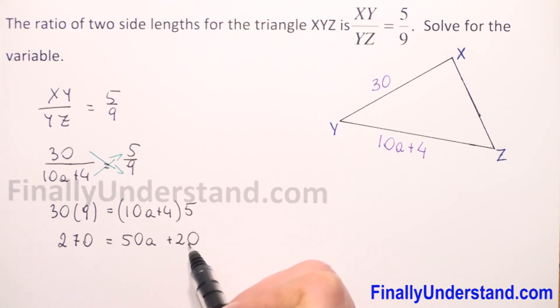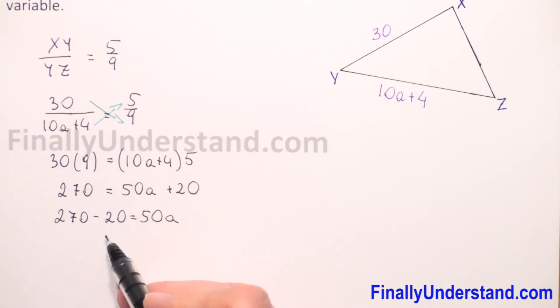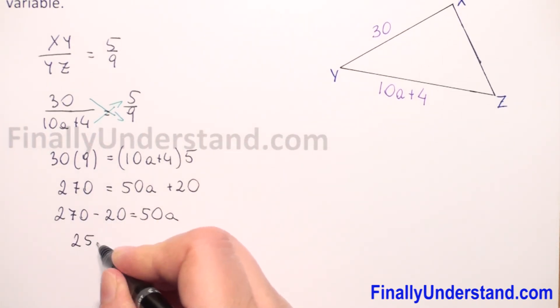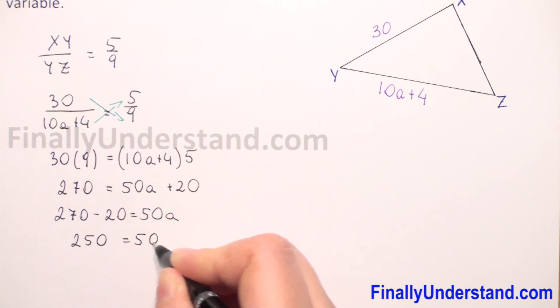I will move 20, positive 20 to the left. So it will be 270 minus 20, so this is 250, is equal to 50a.